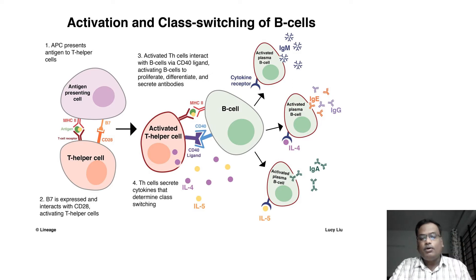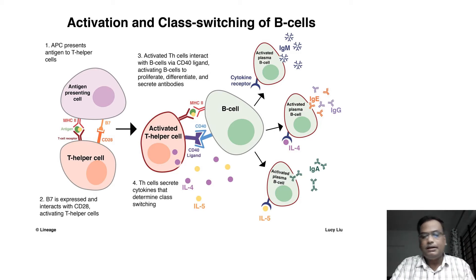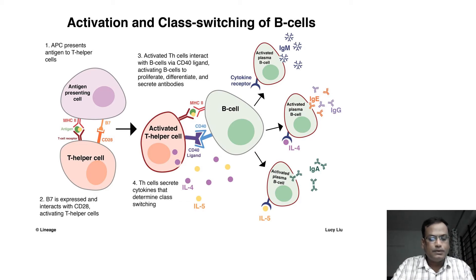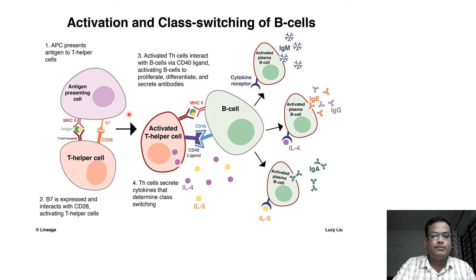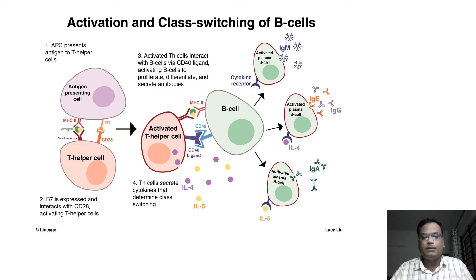There is a syndrome called acquired immunodeficiency syndrome — AIDS. In AIDS, whenever a pathogen enters the body, it should be identified by the immune system, which then produces antibodies or directly attacks with cells. The first step — identification of the pathogen and passing that information to B cells to produce weapons against the pathogen — is very important.